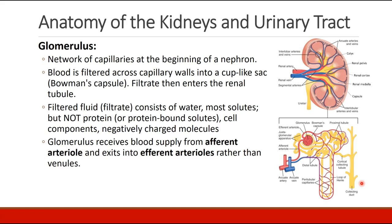Looking at the anatomy of the kidneys, we start with the glomerulus. This is a network of capillaries at the beginning of a nephron. Blood is filtered across capillary walls into a cup-like sac called Bowman's capsule, and the filtrate then enters the renal tubule. The filtrate consists of water and most solutes, but it does not contain protein or any protein-bound solutes, cell components, or most negatively charged molecules.